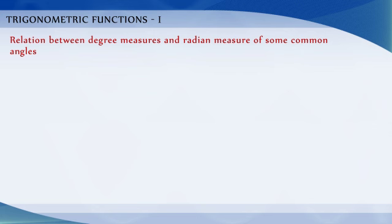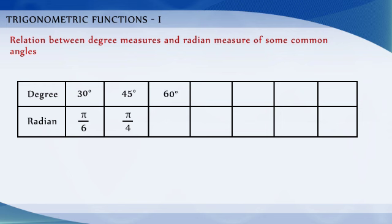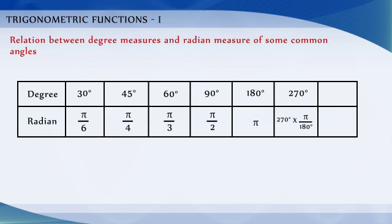The relation between degree measure and radian measure of some common angles: 30° = π/6, 45° = π/4, 60° = π/3, 90° = π/2, 180° = π, 270° = 3π/2, and 360° = 2π radians.